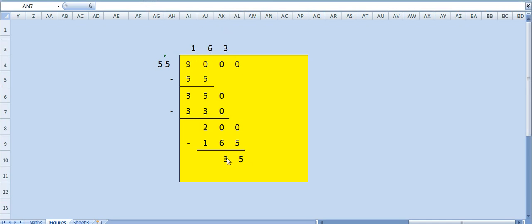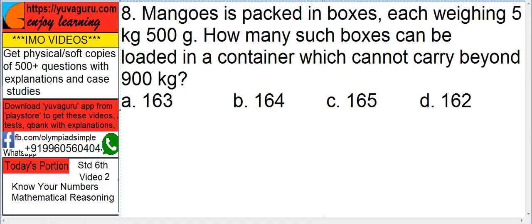So, if you divide next, it will go in points, so you cannot have a point, means the containers in points. So, only 163 would be the answer, these boxes cannot be in point, it can be either 1 box or 0 box. So, answer is 163.